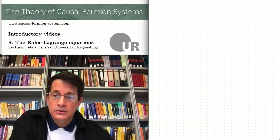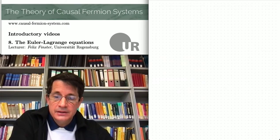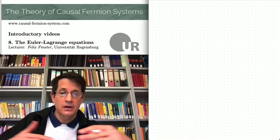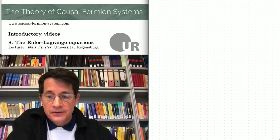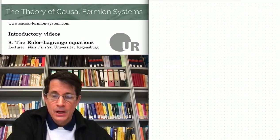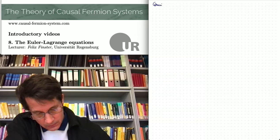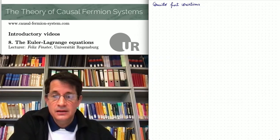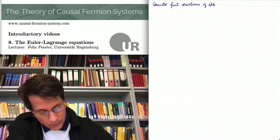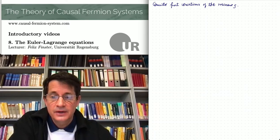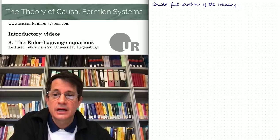The situation here is a little bit similar to that in general relativity, where one has an action — the Einstein-Hilbert action — but in order to do physics one needs to consider the corresponding Euler-Lagrange equations, namely the Einstein field equations. By analyzing those one can consider the Cauchy problem, study how gravitational fields evolve in time, and all of that. There is also a similarity from the more technical or mathematical point of view, in that we consider first variations — however, not of a classical field configuration, but instead of the measure rho. The fact that we vary a measure is quite different from classical field theory, and as we shall see, also the structure of the resulting Euler-Lagrange equations is quite different.